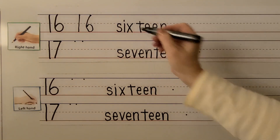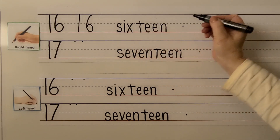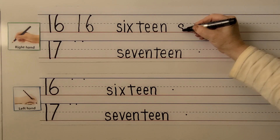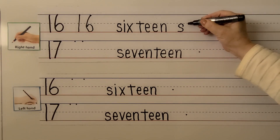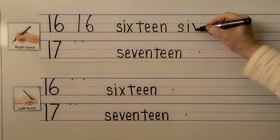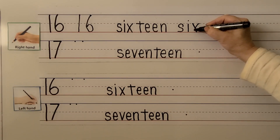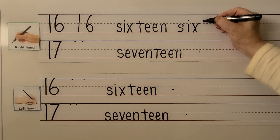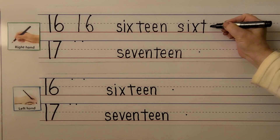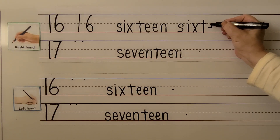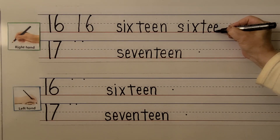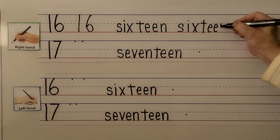We can write the word 16. We start with the S, then we do an I, we do an X, we do a T — start over here and pull it towards our hand for crossing the T. We make an E, then another E, then an N, then an E. S-I-X-T-E-E-N.